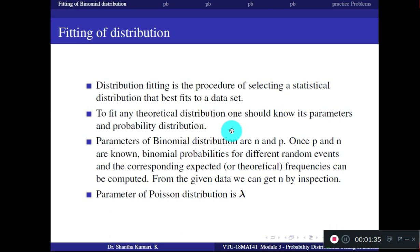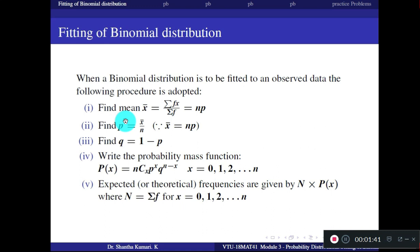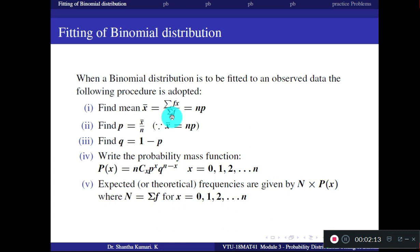Here are the steps involved in fitting a binomial distribution. The data will be given with x values and corresponding frequency values f — two rows, one containing x values and one containing frequencies. First, find the mean: multiply each f value with its corresponding x value, find the summation, then divide by the total sum of all frequencies. This gives you the mean value.